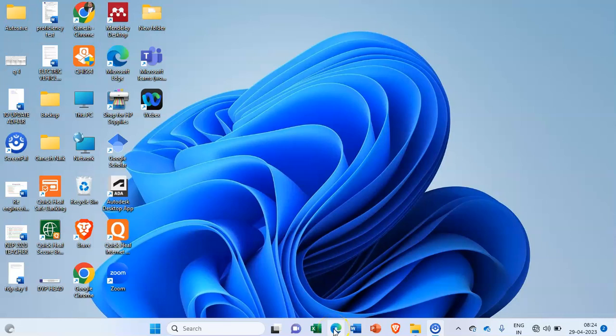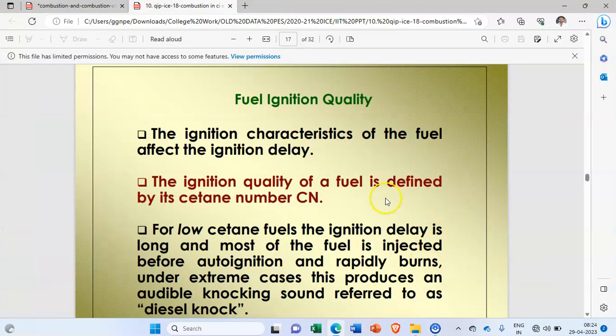Good morning students. In today's lecture we have discussed about the knocking in CI engine. Now let us discuss about what is the fuel ignition quality in the CI engine or it is also called as the cetane number.